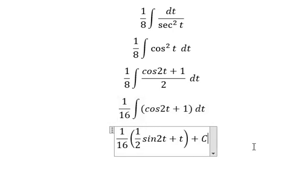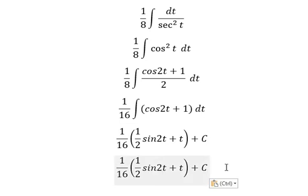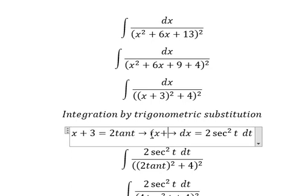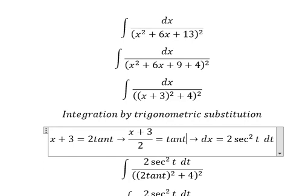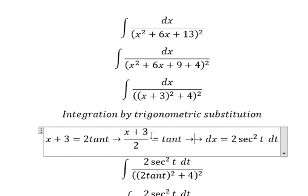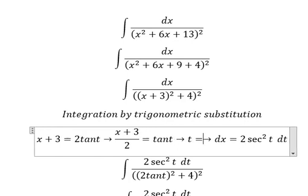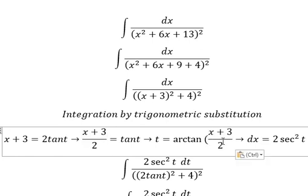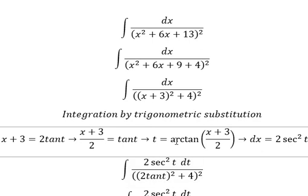We need to divide both sides by 2 to find the value of t. Then we find the value of t, which is arctan of this expression. So I will substitute back to change from t to x.